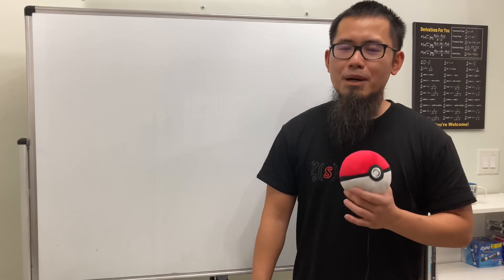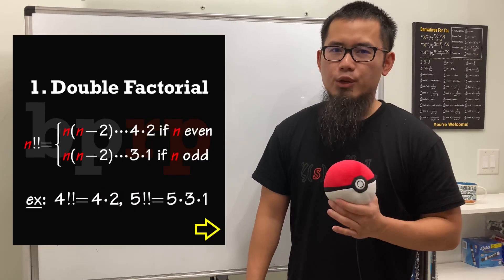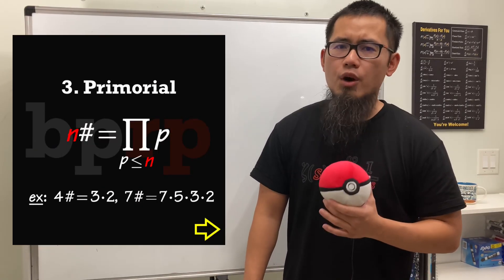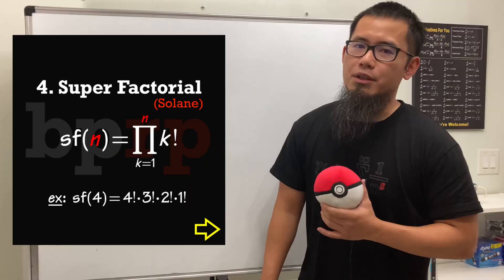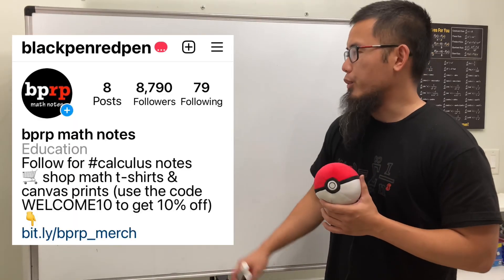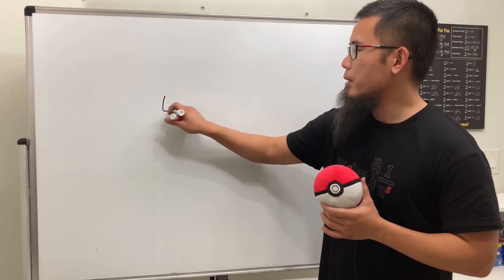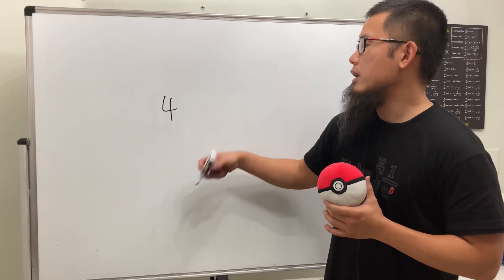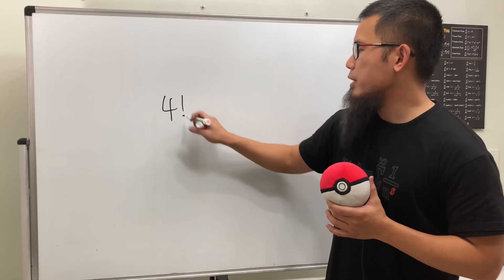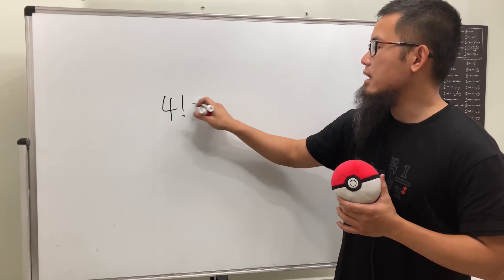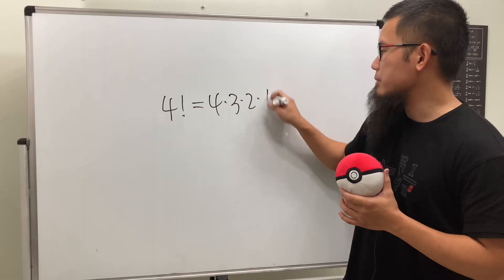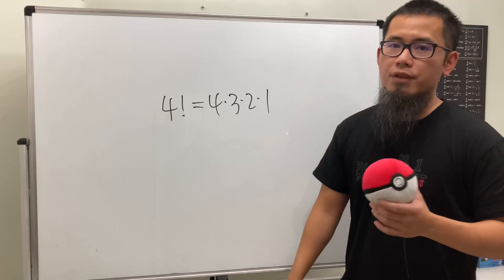Today I wanted to talk about seven factorials that you probably didn't know. First, of course, we should talk about the usual factorial — let's talk about four factorial. You just put an exclamation mark after that, and it's just four times three times two times one.